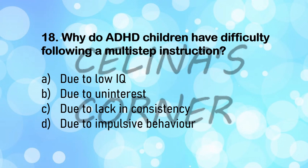Question number 18: why do ADHD children have difficulty following a multi-step instruction? Is it due to low IQ, being uninterested, lack of consistency, or due to impulsive behavior? The correct answer is option D, due to impulsive behavior. These children don't lack the sense of good or bad — they know what is right or wrong — but it is in their nature to act before they think. So they will do an action and then later realize it was wrong and feel guilty, but by then the act is already done. When a multi-step instruction is given, the child has already started after hearing the first step and has not heard the third, fourth, or fifth step. Hence, they are unable to follow multi-step instructions because they are so impulsive.